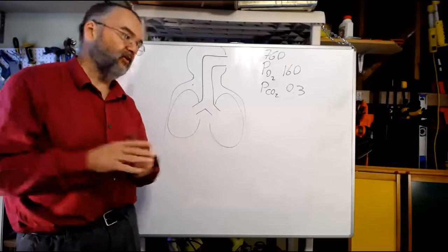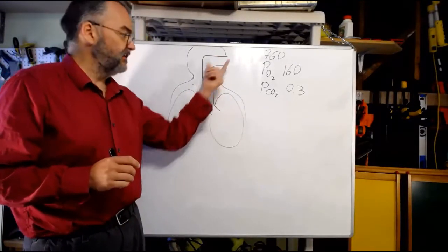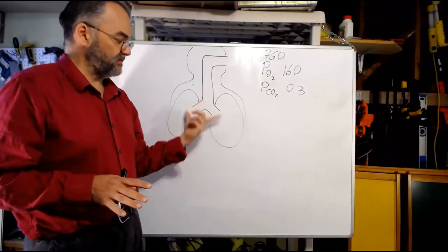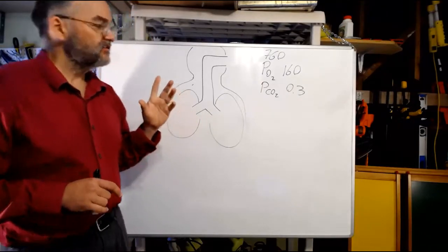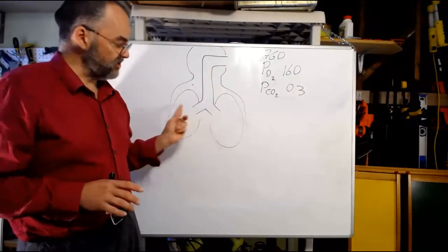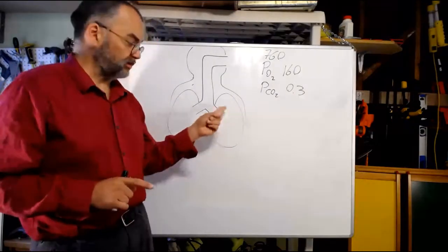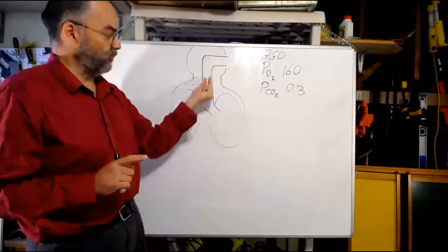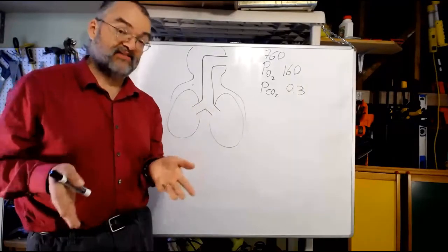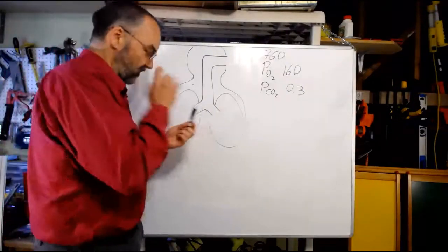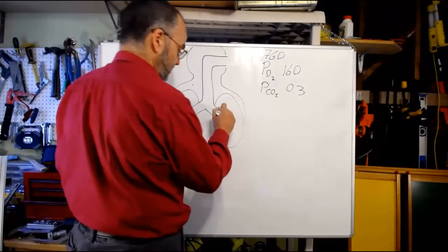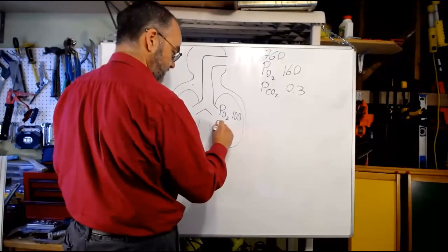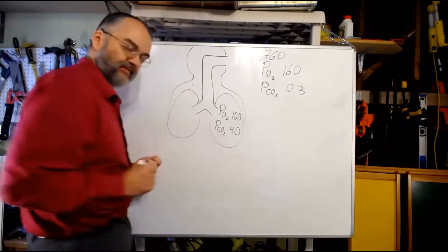Also keep in mind the dead space: of the air you breathe in, only part of it is fresh air. That 150 milliliters of dead space is the first stuff that goes to your alveoli. So altogether, fresh air is only exchanging a part of what's in your lungs, which means a lower pO2 and higher pCO2 in there. Add in one more factor — we add a bunch of water vapor to the incoming air, which displaces some oxygen. So alveolar air generally has a pO2 of about 100 and a pCO2 of about 40.